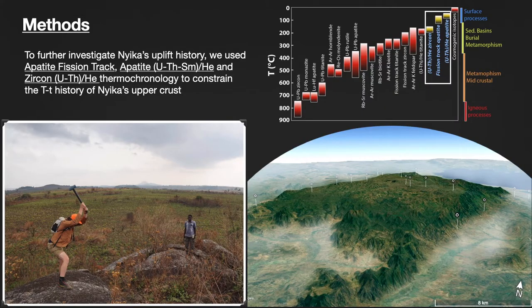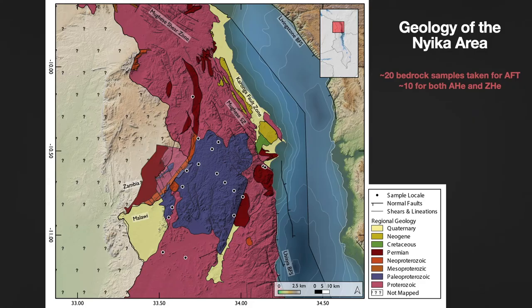To further investigate the uplift history of Nyika, we used apatite fission track data as well as apatite and zircon helium data to constrain the uplift history of the upper crust along Nyika. We took about 20 basement samples from the area. Importantly, a few samples were taken from the adjacent Karoo deposition in the north as well as adjacent to Karoo deposition along Nyika's southeastern fault — these were taken on the upthrown side of that fault — and this was to constrain Karoo extent and possible fault reactivation.